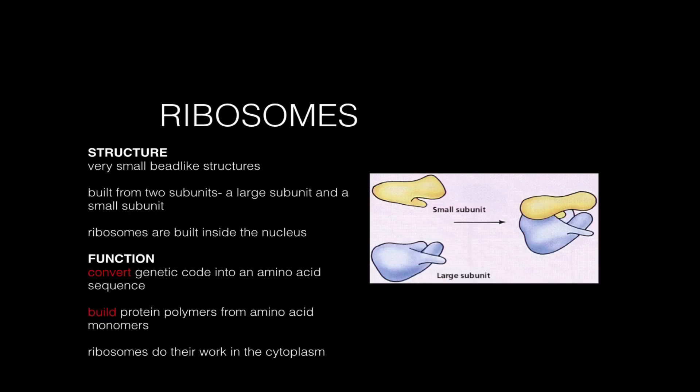The function of ribosomes is to build proteins and they do this by converting genetic code into a sequence of amino acids. So literally ribosomes are building polymers called proteins from amino acid monomers.